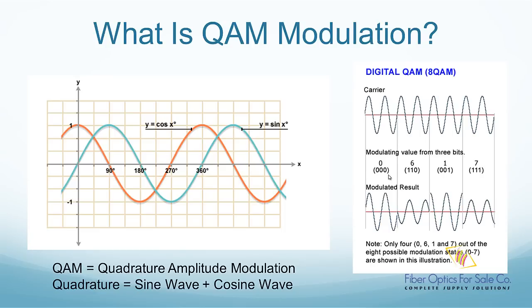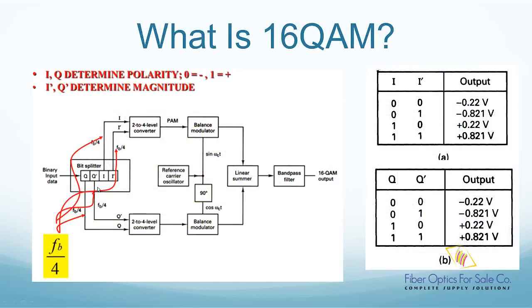In 16 QAM, the input binary data is combined into groups of four bits called Quadbits. As shown in this picture, the I and the I apostrophe bits are sent to the sine wave modulation path.